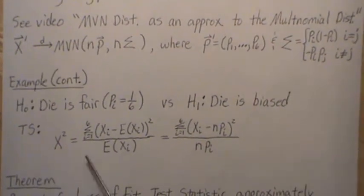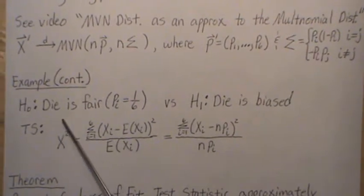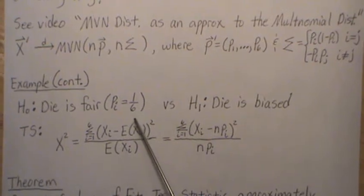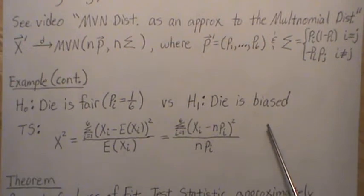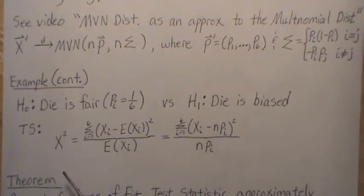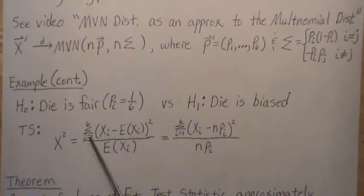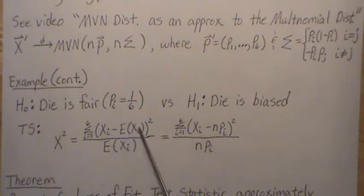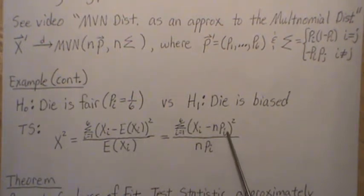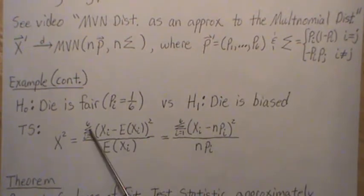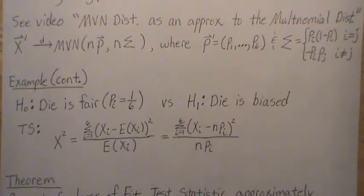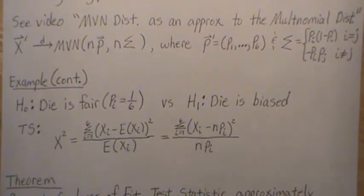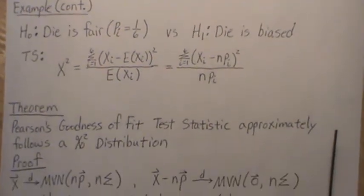Following the die example, the null hypothesis is that the die is fair — meaning each probability has a one-sixth chance of being rolled — versus the alternative hypothesis that the die is biased. The test statistic for Pearson's goodness of fit test is chi-squared, equal to the sum over each category of (X_j minus the expected value of X_j) squared divided by the expected value of X_j, where the expected value of each component is n times p_i. This works for k categories generally.